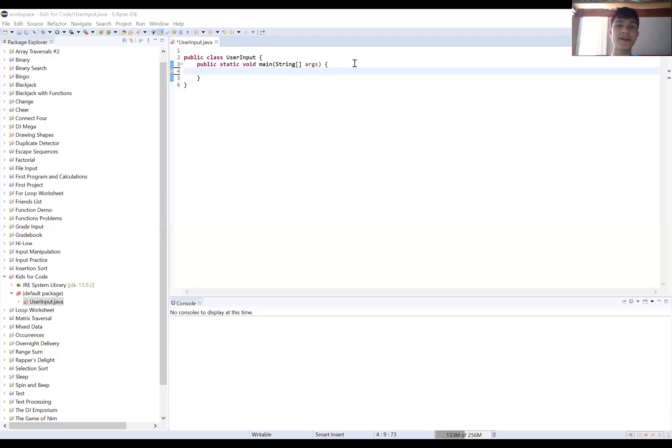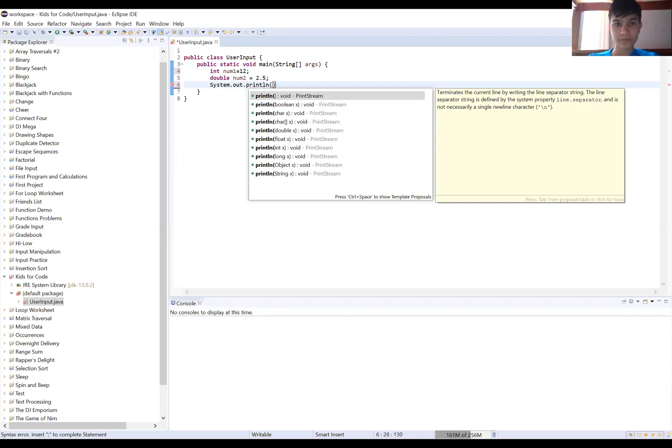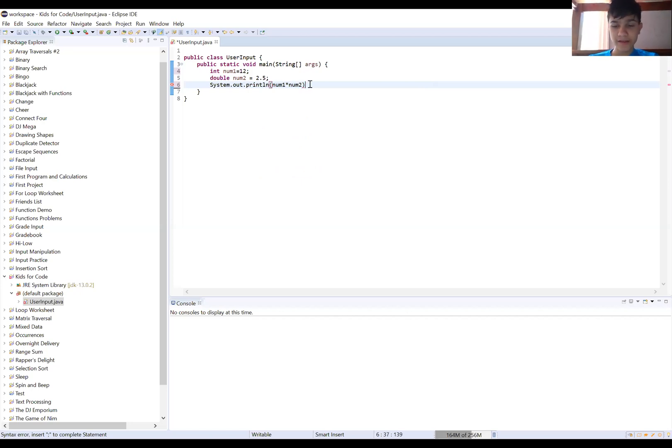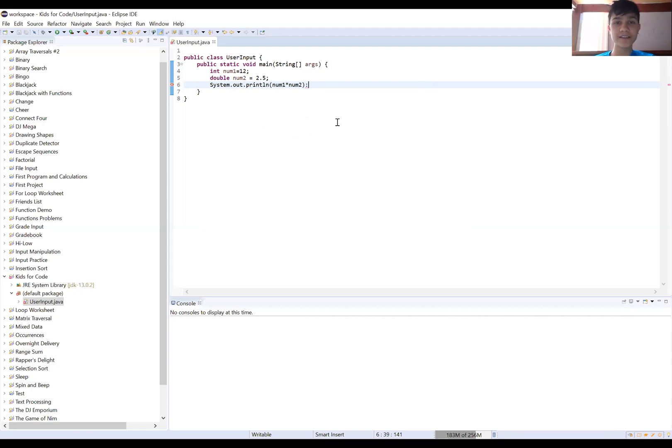I will show you an example of mathematical operations in Eclipse. Let's create an integer int num1 equals 12 and a double num2 equals 2.5. Let's multiply these two together in a print statement: System.out.println num1 times num2. Let's check out the result. There are some errors and this is because I used a colon instead of a semicolon. That is something that you should make sure you fix every time you run your code. I'm going to run it again, this time with the semicolon.